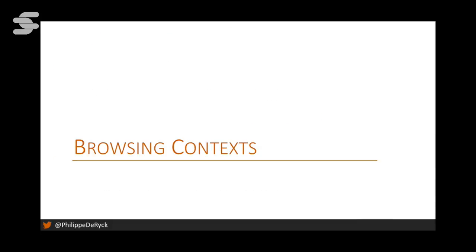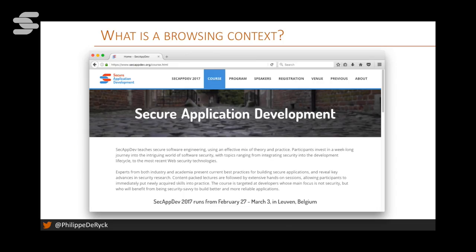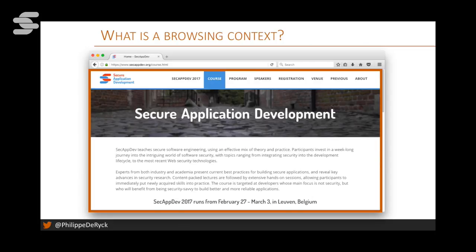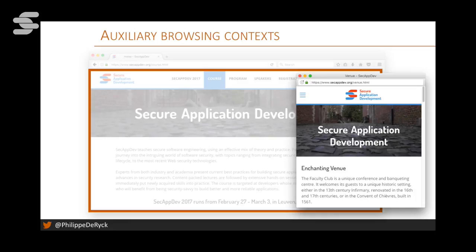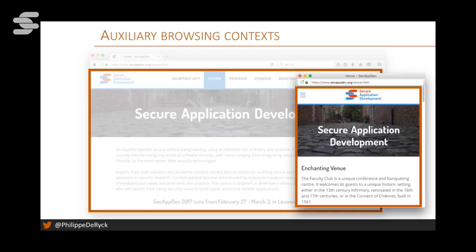Let's start with browsing contexts. What is a browsing context? Essentially it's the context where a page is loaded. Browsing contexts come in various flavors. If a web page opens a pop-up, that pop-up also has a browsing context — called an auxiliary browsing context — that lives somewhere else but has a relationship with the original page. One would be the parent and the other the child. This relationship has certain security implications.